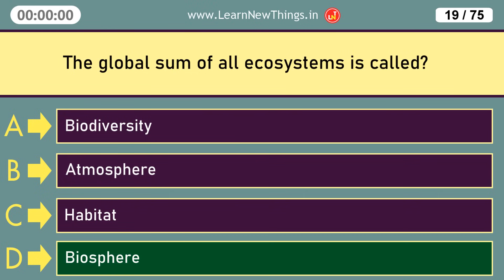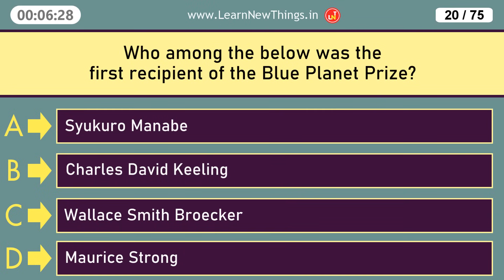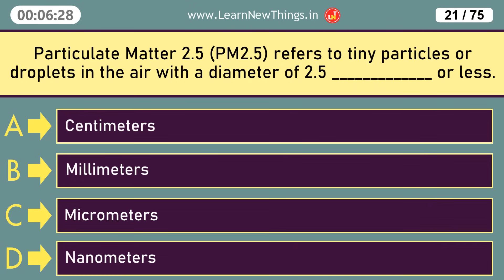Who among the below was the first recipient of the Blue Planet Prize? Shukuro Manabe. Particulate Matter 2.5 refers to tiny particles or droplets in the air with a diameter of 2.5 micrometers or less.